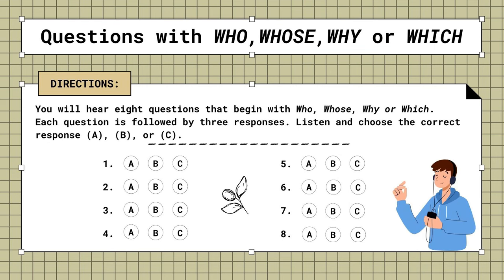Mini test. Questions with who, whose, why, or which. You will hear eight questions that begin with who, whose, why, or which. Each question is followed by three responses. Listen and choose the correct response. A, B, or C.